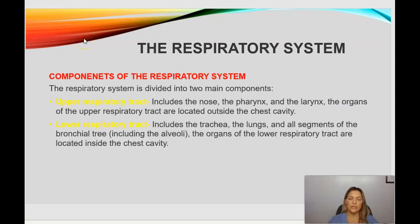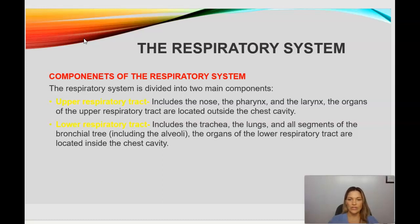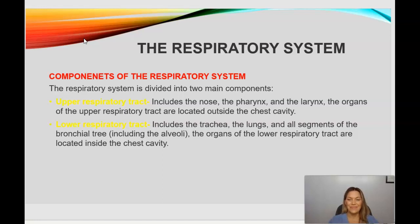Components of the respiratory system include the upper respiratory tract and the lower respiratory tract. The upper respiratory tract includes the nose, the pharynx, and the larynx — and these organs are located outside the chest cavity. Conversely, the lower respiratory tract organs are located inside the chest cavity and include the trachea, the lungs, all segments of the bronchial tree, including the alveoli.